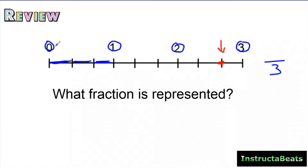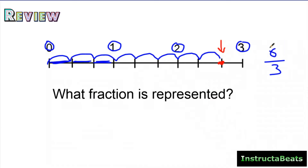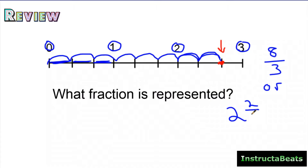If I start at zero and count, I'm going to count one, two, three, four, five, six, seven, eight pieces. So eight thirds is what's represented on this number line. Or you can count your wholes and say two wholes and then one, two equal pieces after that — so two and two thirds. You could represent this fraction using either the improper fraction or the mixed number.